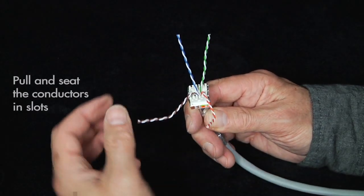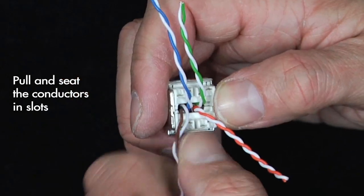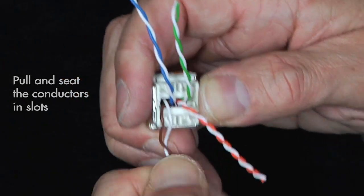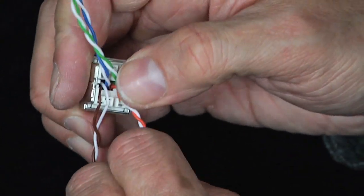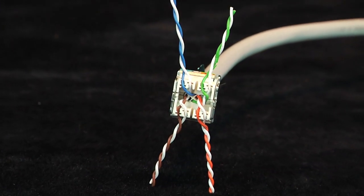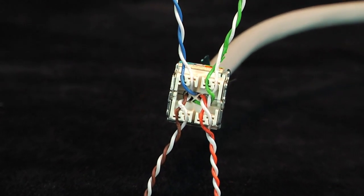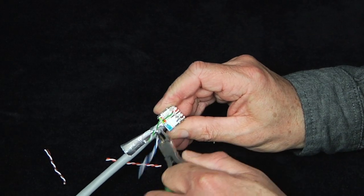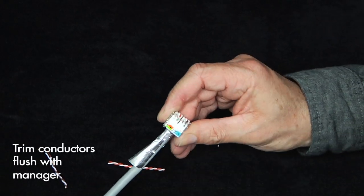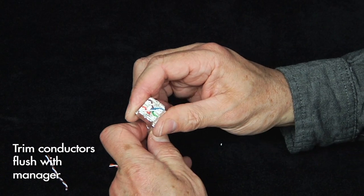Adjust the conductors to ensure each is in its proper slot by slightly twisting or untwisting the pairs. Pull the conductors into provided slots, ensuring that they are fully seated per the color code on the wiring label. Once all pairs are seated, use side cutters to trim each conductor flush with the termination manager.